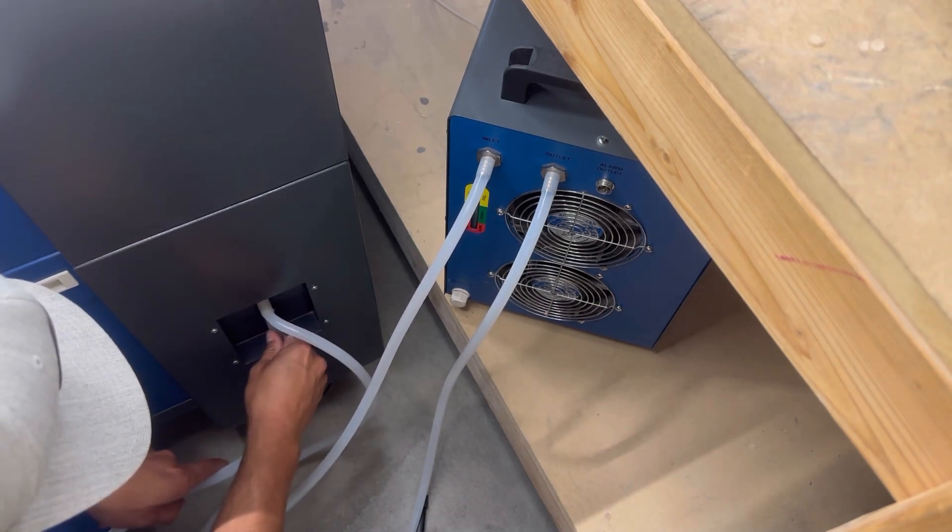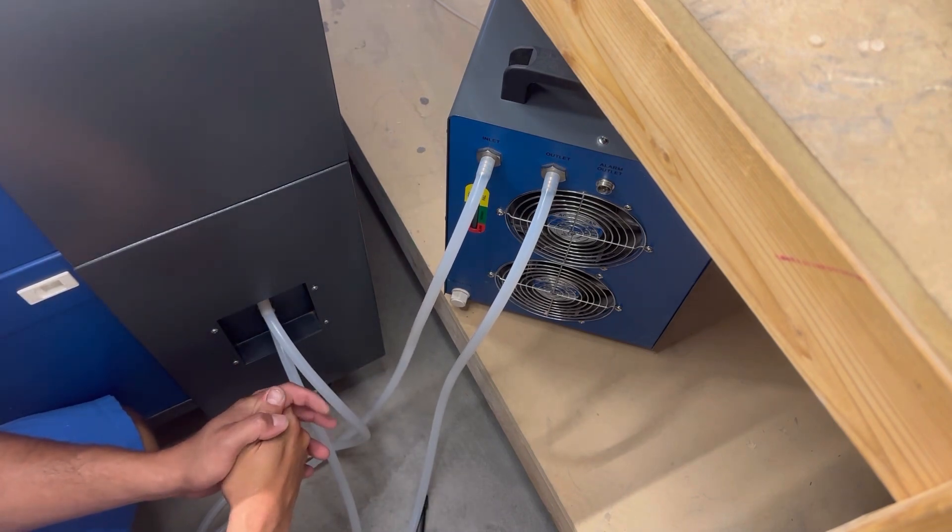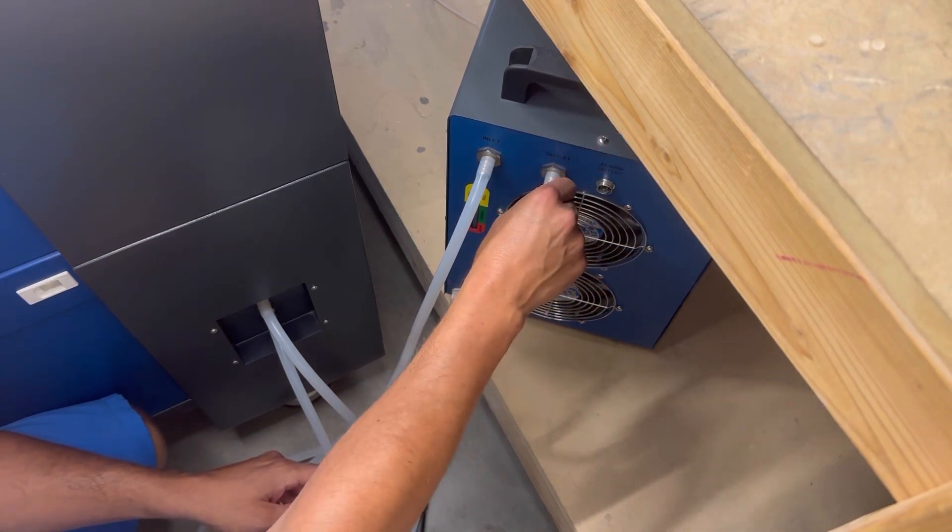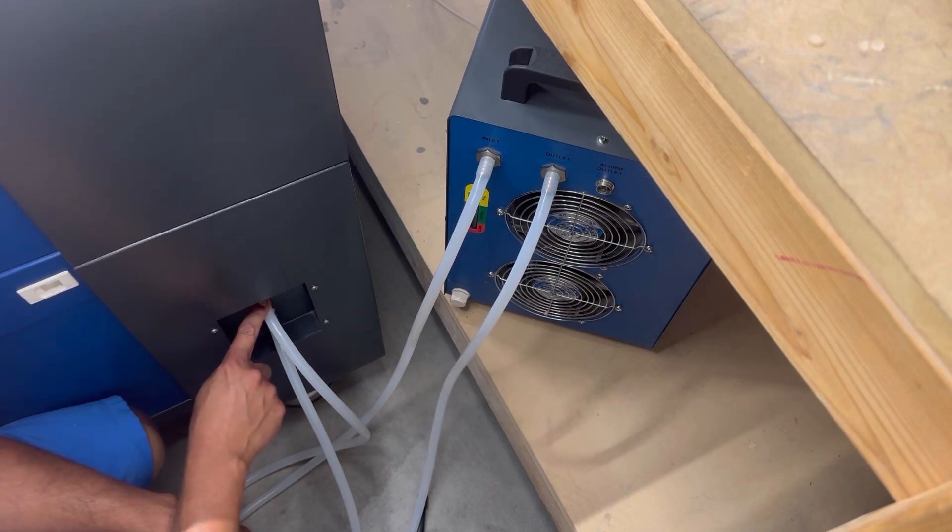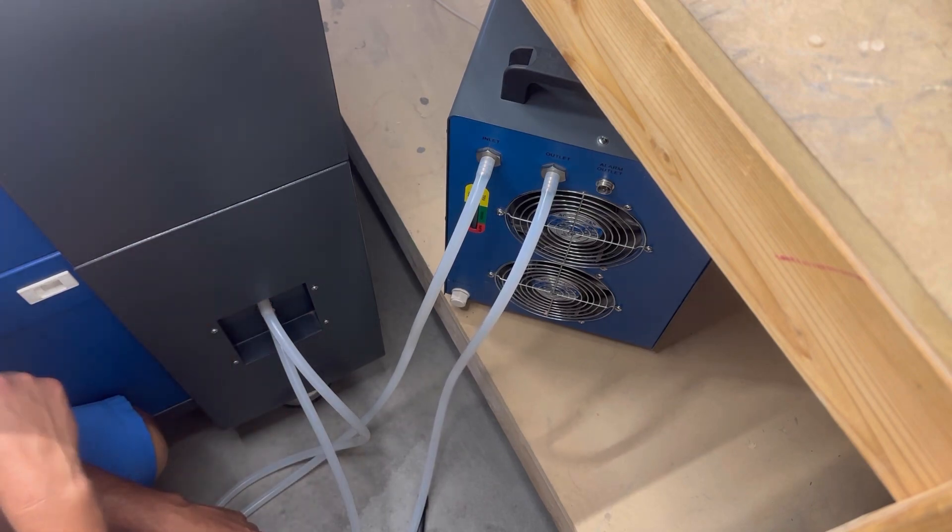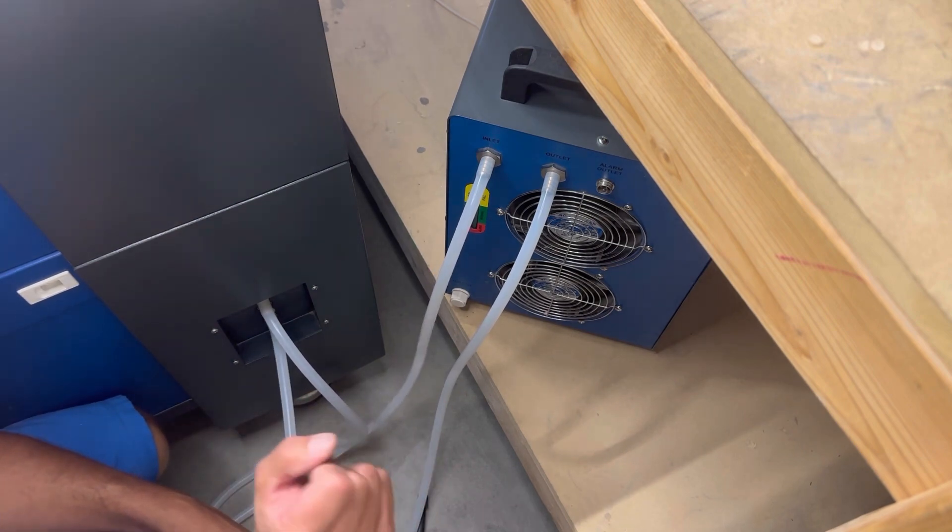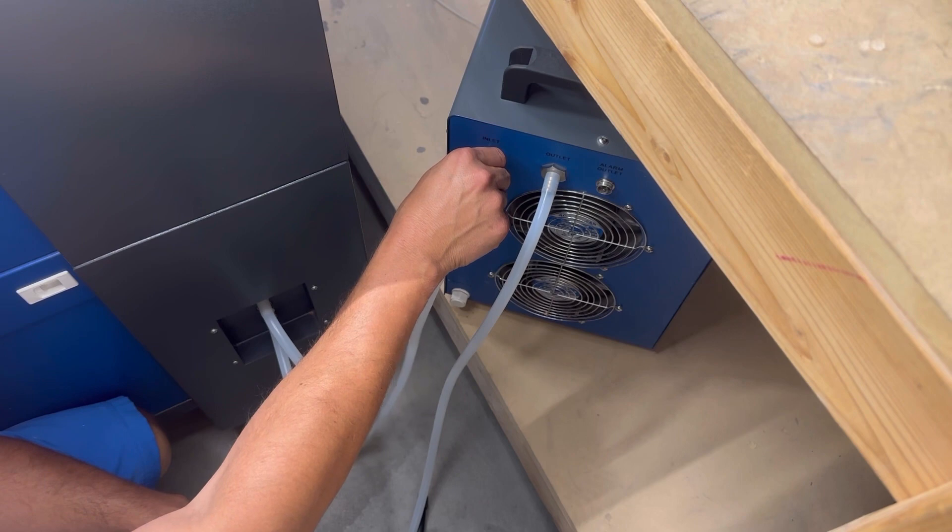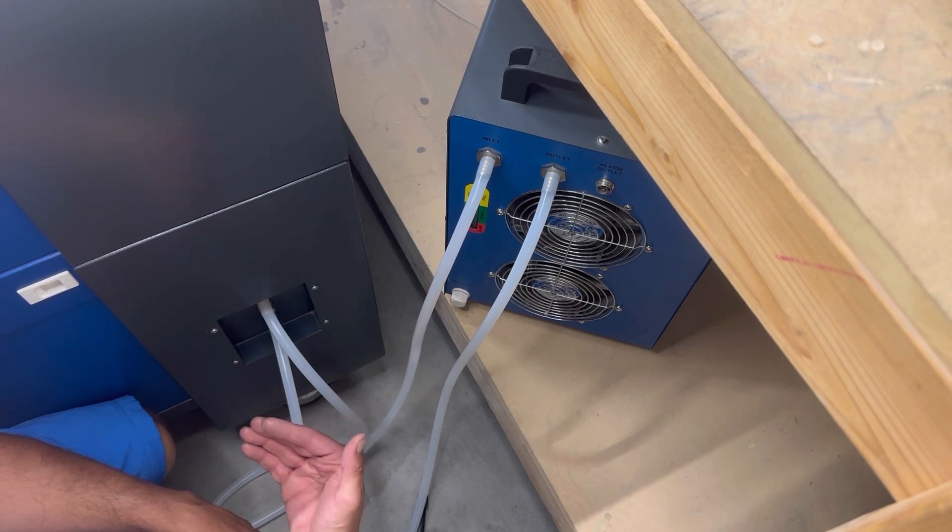You have to think of the flow and it gets kind of confusing, and this is a number one problem that people have connecting these. It's coming out of the chiller, water's pumping out of the outlet to the inlet of the laser. It goes through your laser tube, out of the laser, back to the inlet of the chiller. I know it gets confusing, but you'd be surprised how many people reverse these and then they have the water flow going backwards. So that's the number one problem of issues.